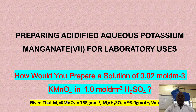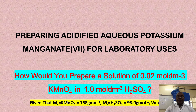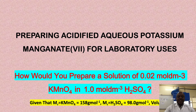Given that the molecular weight of potassium manganate VII is 158 g/mol, the molecular weight of sulfuric acid is 98.0 g/mol, and the volume is 1 dm³. There are two phases in preparing this acidified aqueous potassium manganate solution. The first phase is to prepare the potassium manganate solution, the second phase is to prepare the sulfuric acid solution, and the third phase is to acidify the potassium manganate solution.